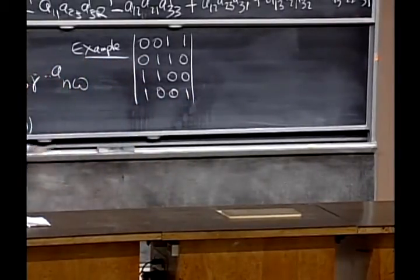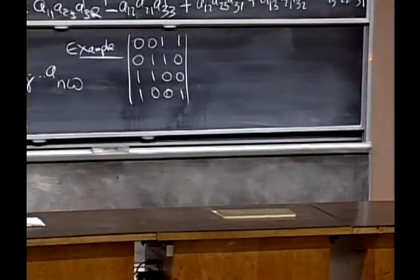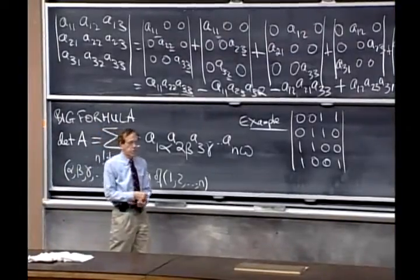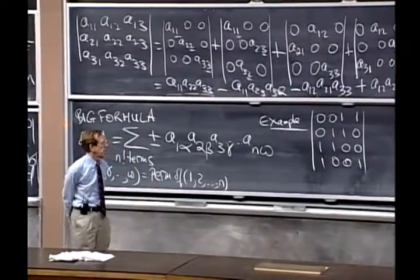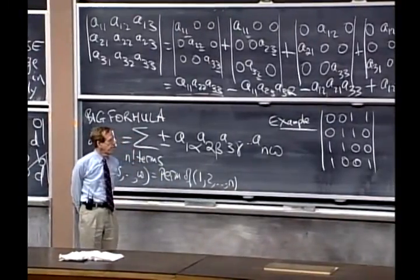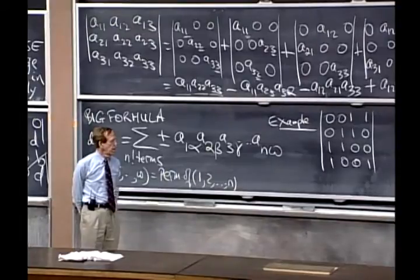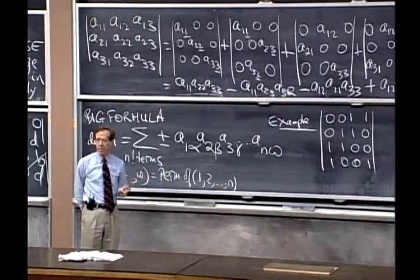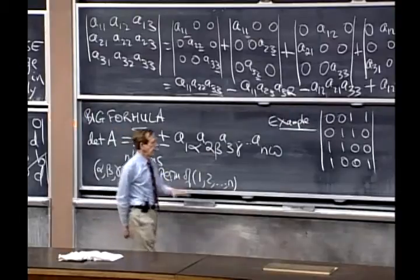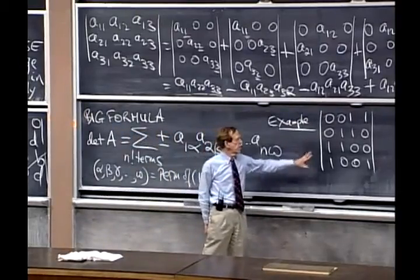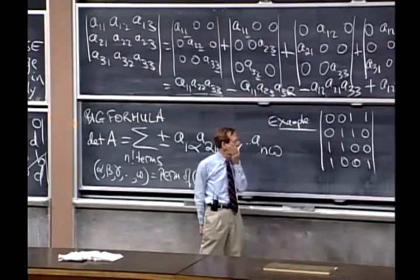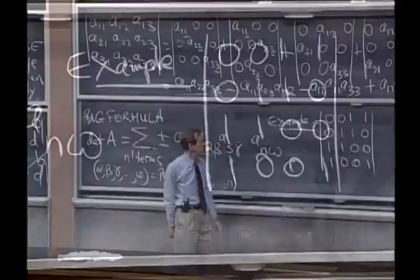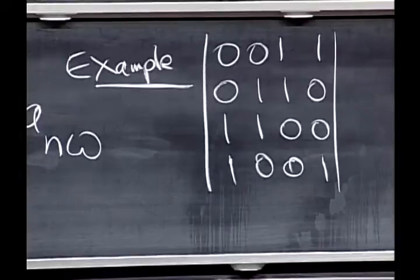I don't know the determinant of that matrix. So mathematics is being done for the first time in front of your eyes. What's the determinant? Well, there are 24 terms because it's four by four. Many of them will be zero because I've got all those zeroes there. Maybe the whole determinant is zero. Is that a singular matrix? That possibility definitely exists.